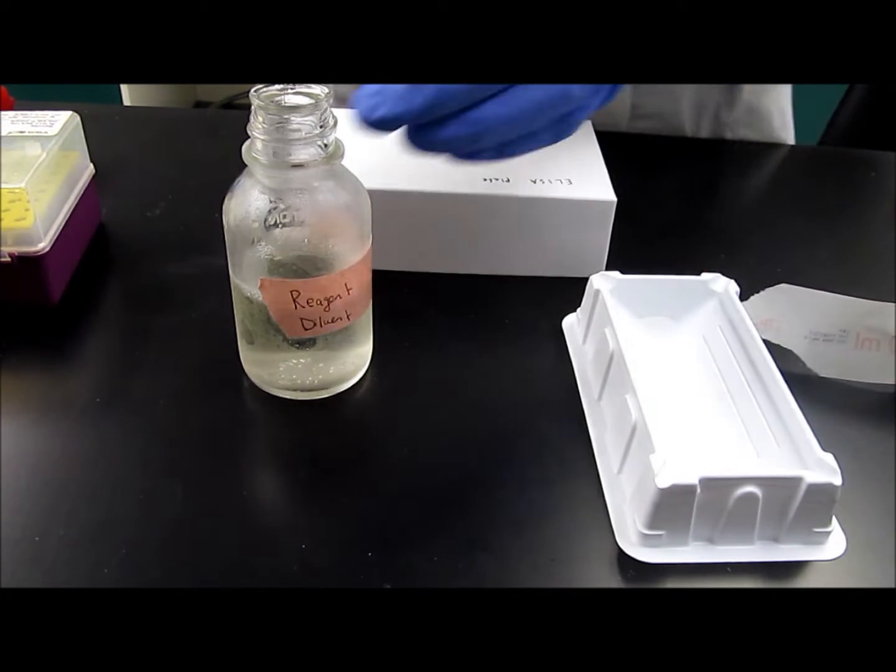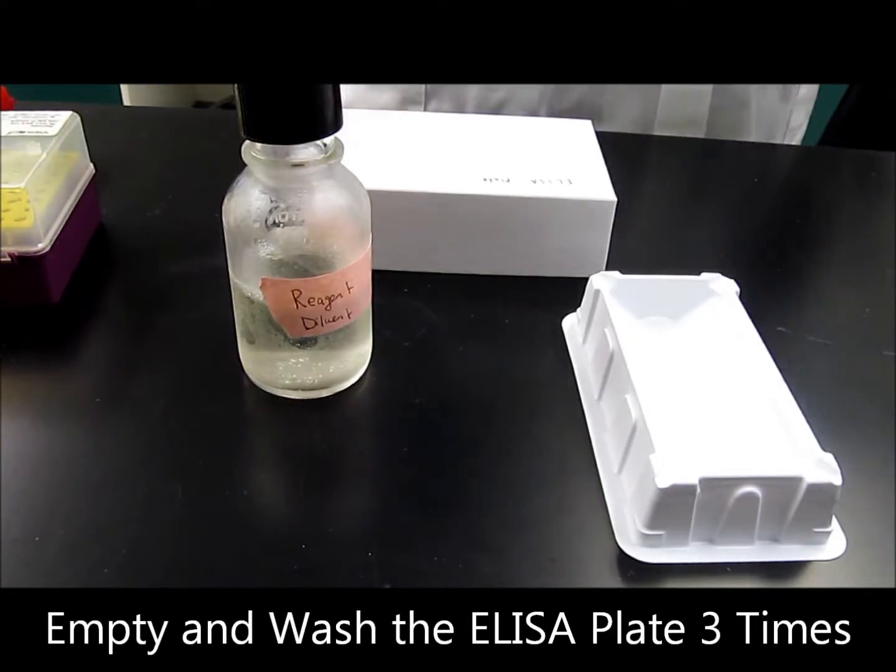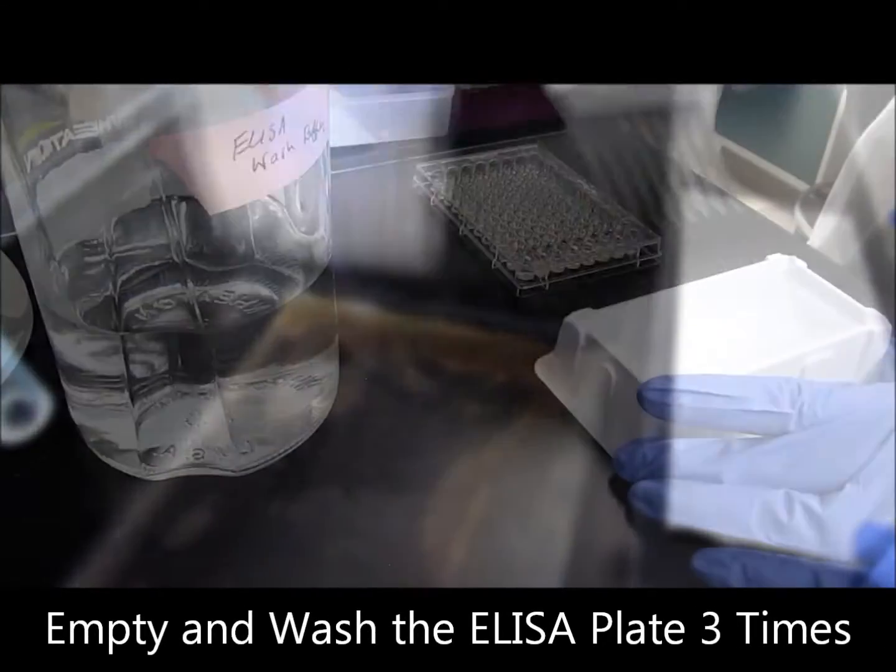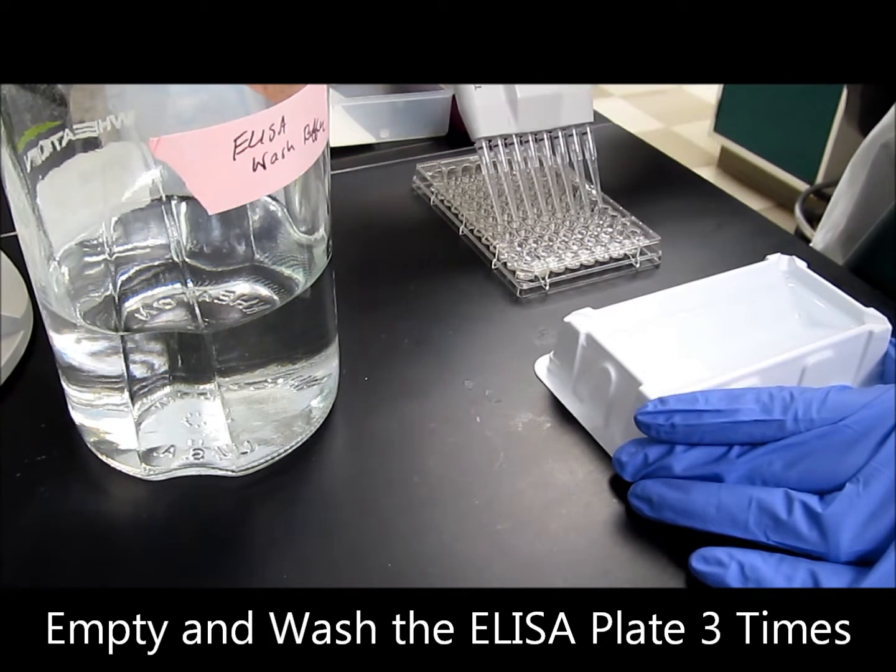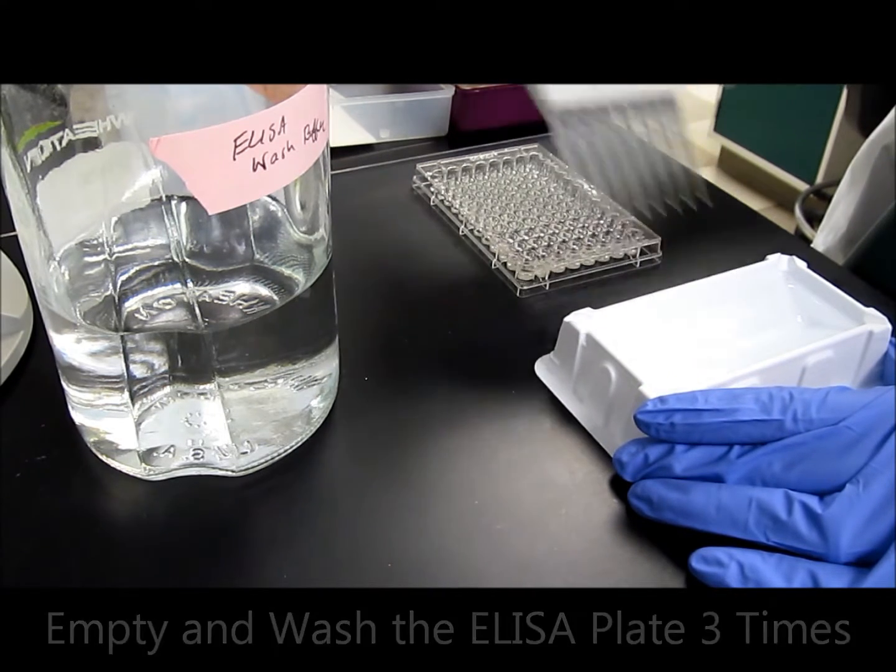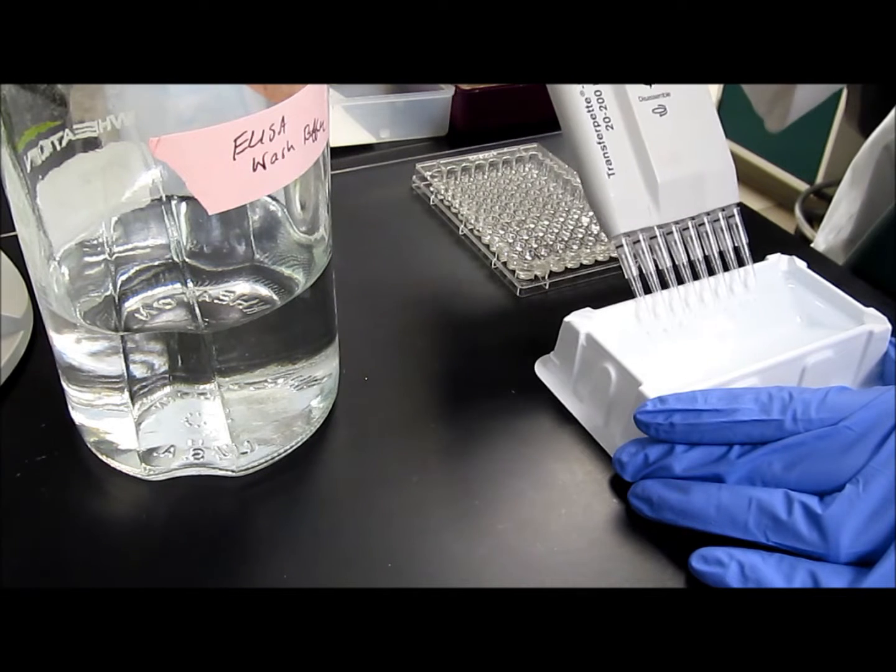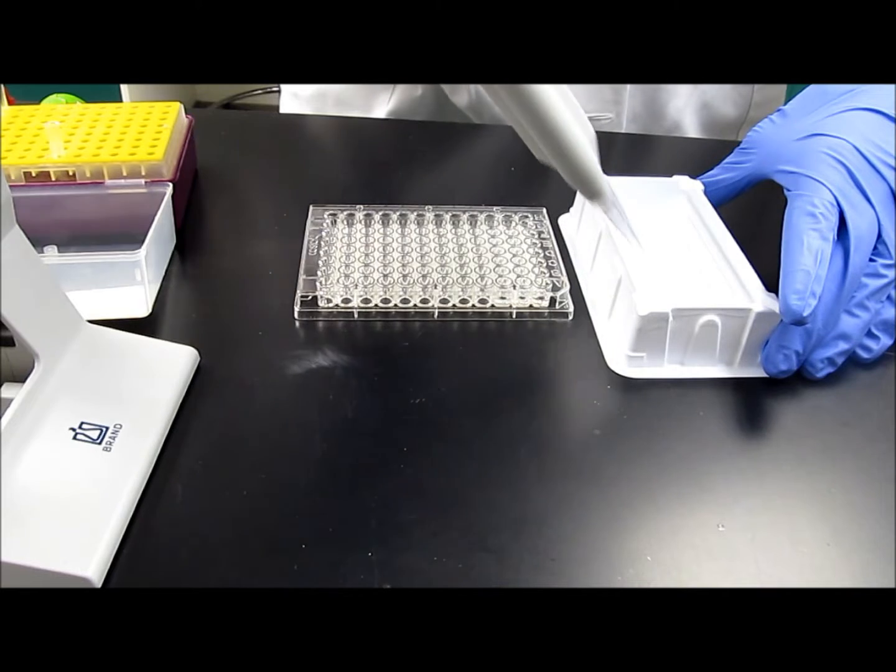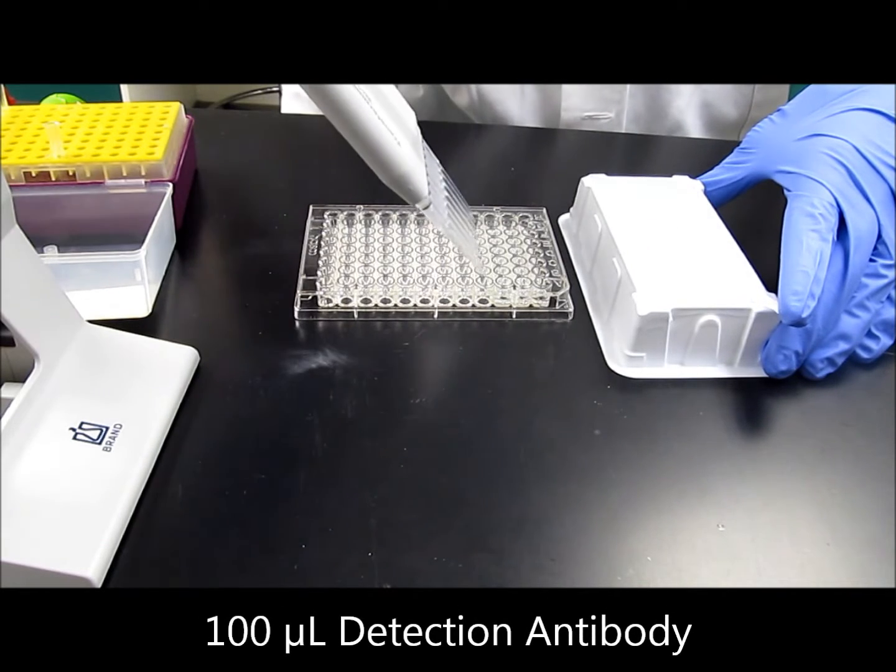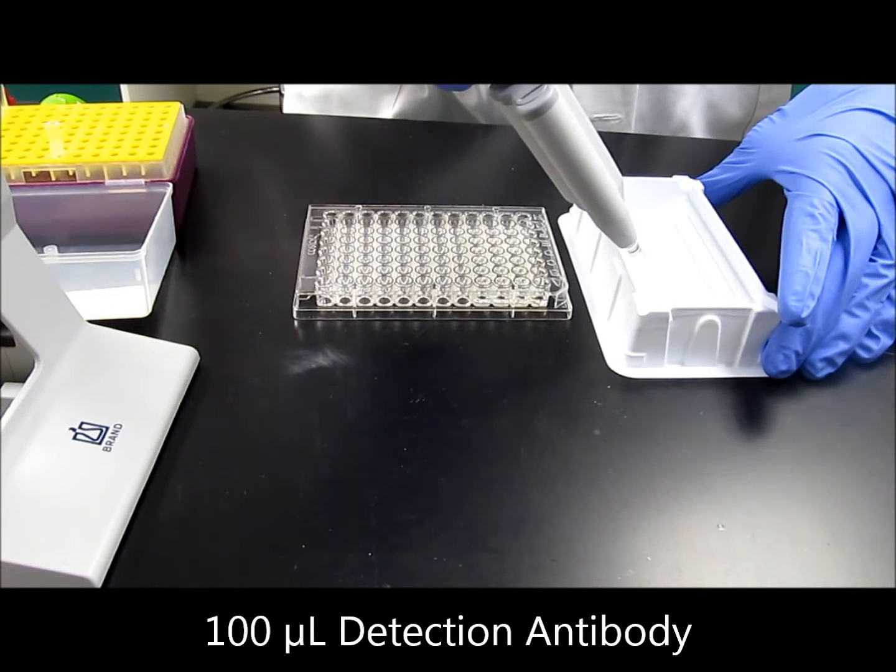Once the diluted detection antibody is ready, empty out and wash the ELISA plate 3 times with 200 microliters of wash buffer as described before in our earlier ELISA tutorial video. The washing step is important because it removes any unbound sample protein from the wells of the ELISA plate. After finishing the wash steps, add 100 microliters of detection antibody to each well of the ELISA plate.